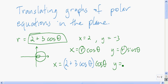The y coordinate will be—we take the r value, which is 2 plus 3 cosine theta, and then we multiply by the sine of theta.